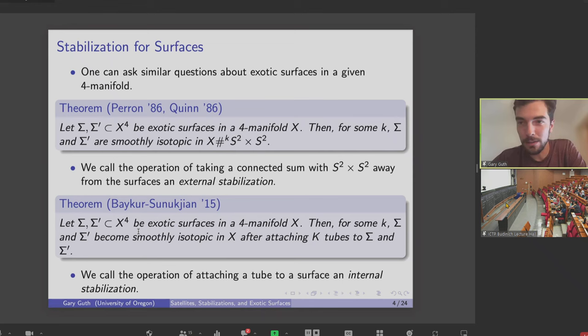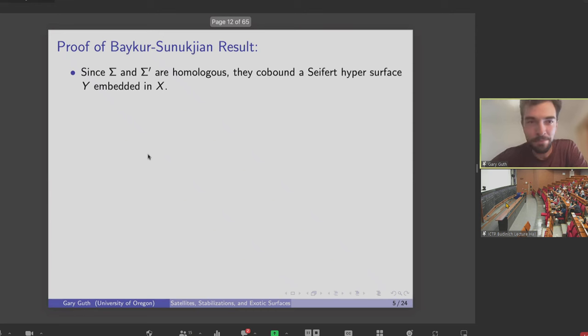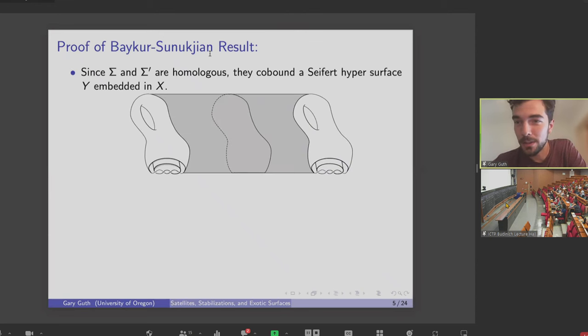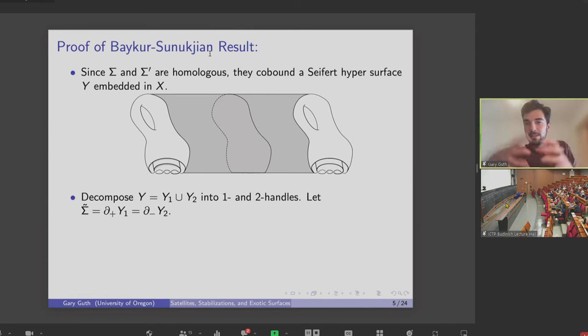Since it's a little bit illuminating, let me sketch the proof of this theorem of Baykur-Sunukjian. The idea is, okay, sigma and sigma prime, they're homologous. So they co-bound some Seifert hypersurface embedded in X, which I've sort of drawn cartoonishly here. And I can think of this as a cobordism between sigma and sigma prime. And I can give this a handle decomposition.